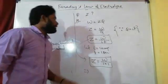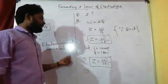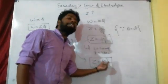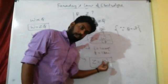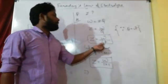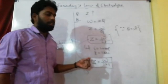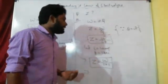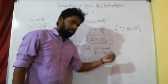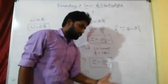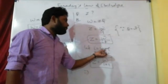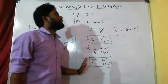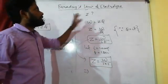Z is the electrochemical equivalent. It is defined as the mass of an ion deposited or liberated at the electrode when a current of 1 ampere passes for 1 second in the electrolytic solution. This completes Faraday's first law and the definition of electrochemical equivalent Z. Next class will continue. Thank you.